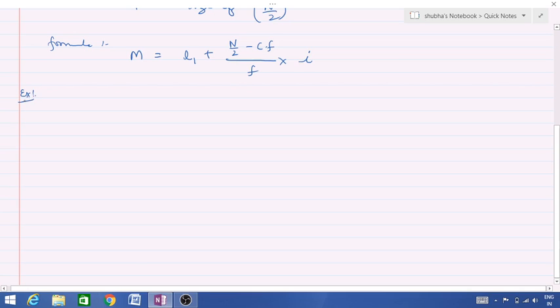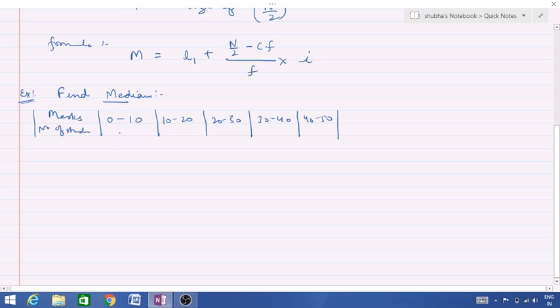So let's start with an example. Suppose I have taken an example: find median. Question is marks is given, 0 to 10, 10 to 20, 20 to 30, 30 to 40, 40 to 50. Along with it number of students are given: 3, 4, 2, 7, 10.